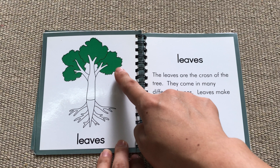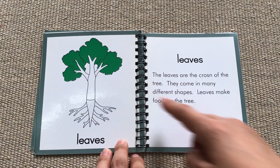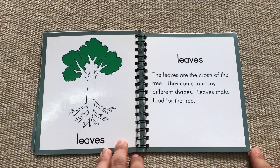Leaves. The leaves are the crown of the tree. They come in many different shapes. Leaves make food for the tree.